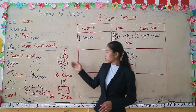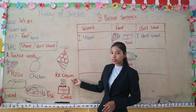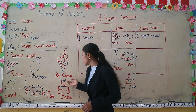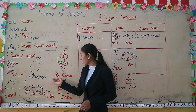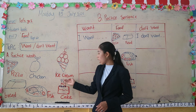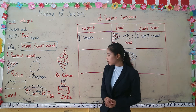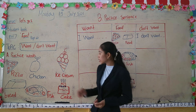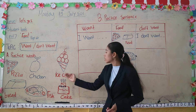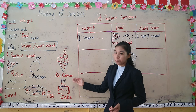Ice cream — it means something cold. Do you like ice cream? For me, I really like it. So the word ice cream can be spelled I-C-E-C-R-E-A-M. Again, ice cream — I spell I-C-E-C-R-E-A-M.